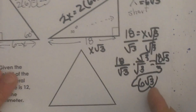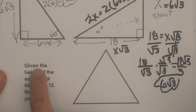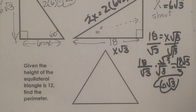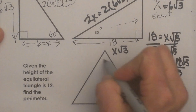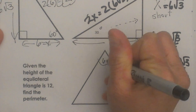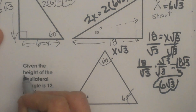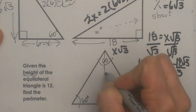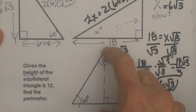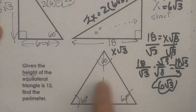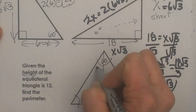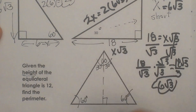Let's look at the last problem: given the height of an equilateral triangle is 12, find the perimeter. How are we going from 30-60-90 to equilaterals? Each angle of an equilateral triangle is 60 degrees. If I draw the height straight down — that altitude — it takes the 60 degree angle at the top and breaks it into a 30 and a 30, giving us two 30-60-90 right triangles to work with.